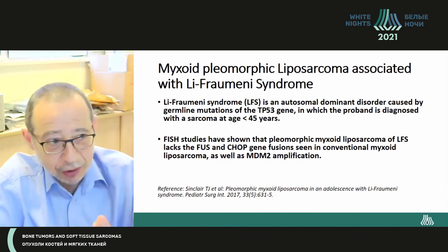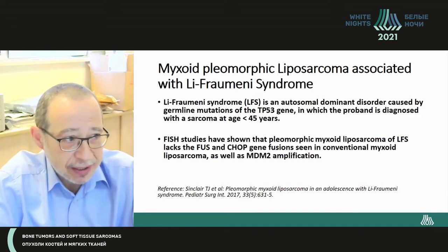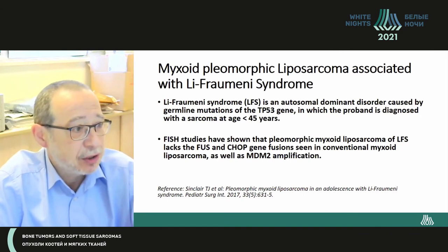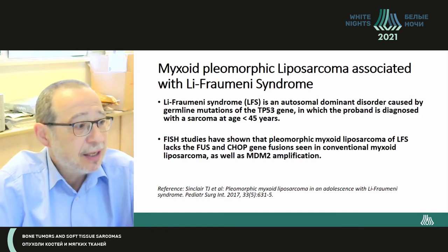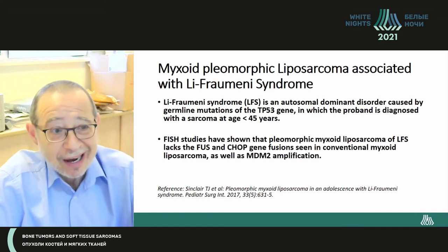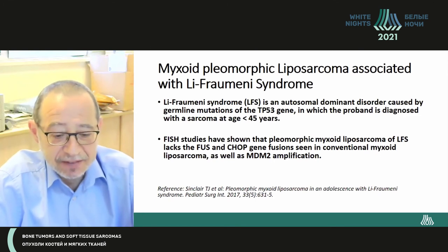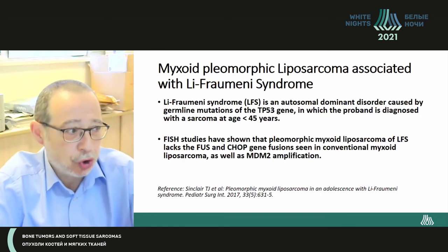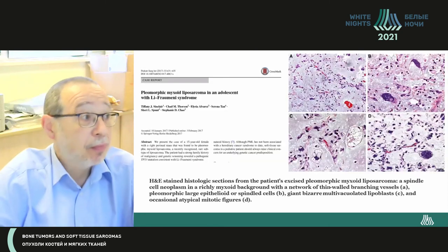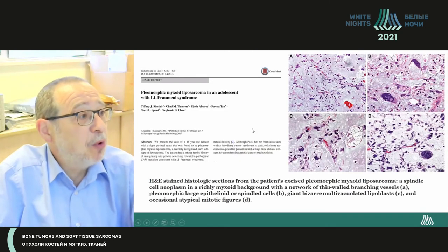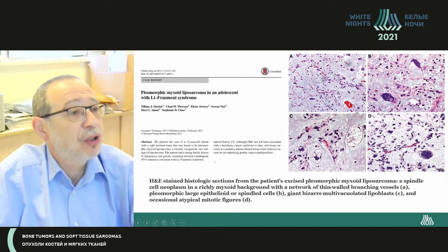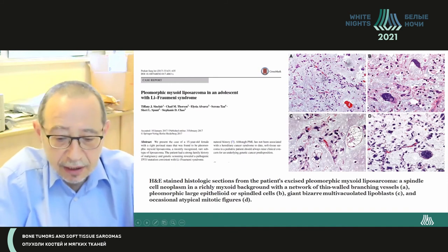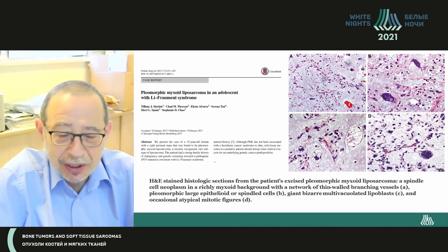Myxoid pleomorphic liposarcoma is a very rare sarcoma occurring in Li-Fraumeni syndrome patients. It is an autosomal dominant disorder caused by multiple germline mutations, and FISH studies are typically negative for all three liposarcoma markers — MDM2, CHOP, and FUS. Quite recently — published in 2017 — there was an article with an absolutely similar morphological pattern and similar genetic alterations.